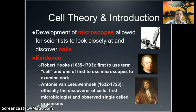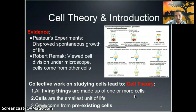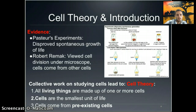Leeuwenhoek receives most of the credit for discovering cells, but it wasn't without the work of Hooke to begin the process. The cell theory has a couple of key points: all living things are made up of one or more cells; cells are the smallest unit of life; and cells come from pre-existing cells. That last point is an interesting one that many scientists have done experiments to examine and test, allowing it to become part of the cell theory.